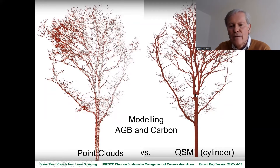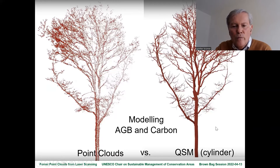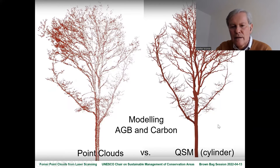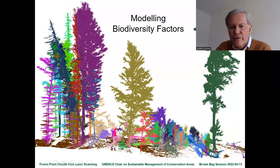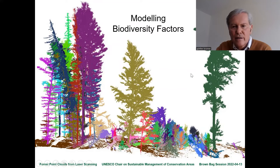You can start modeling from there. You have a point cloud and a cylinder model — the QSM (Quantitative Structure Model) is used for such cases. Different approaches all lead to above-ground biomass and carbon content estimates. You can also assess biodiversity, the diversity of different trees, and if you segment trees in detail, you can identify deadwood lying on the ground.